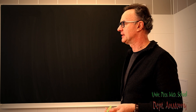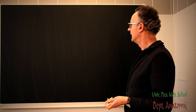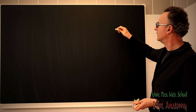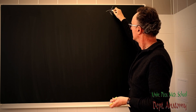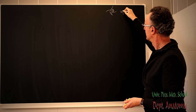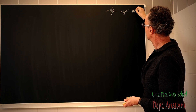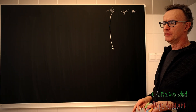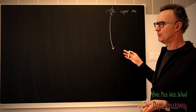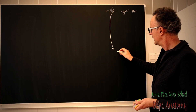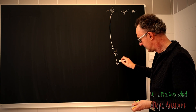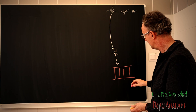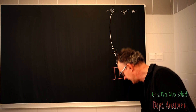The next topic will be the descending pathways of the spinal cord. One major thing I want to show you is a schematic drawing: we have an upper motoneuron in the cortex, and this descends to the lower motoneurons, which are located either in the brainstem or in the spinal cord. From there it runs directly to the skeletal muscle to innervate it, via A-alpha or A-gamma fiber types.